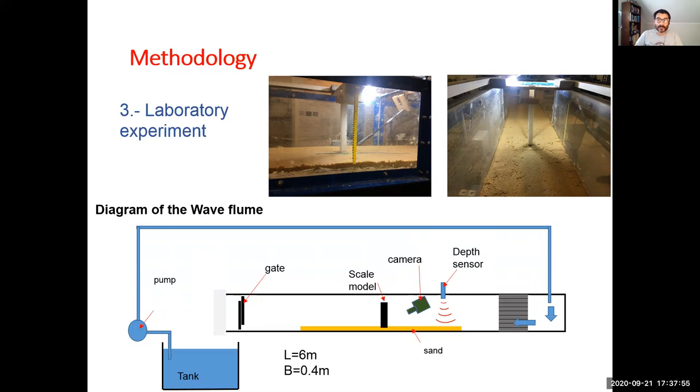The flow depth and scour depth is controlled by an automatized tailgate at the end of the flume and measured by means of ultrasonic distance sensors. The scour depth is recorded by a snake camera, so then after the experiment we can analyze the images of the camera and measure the scour depth as a function of time.